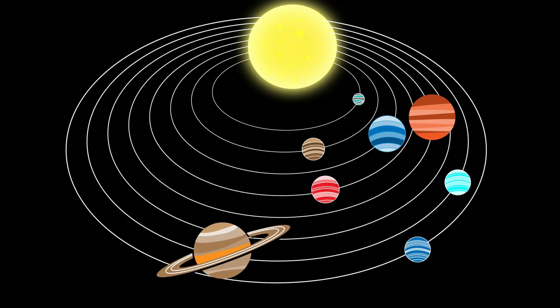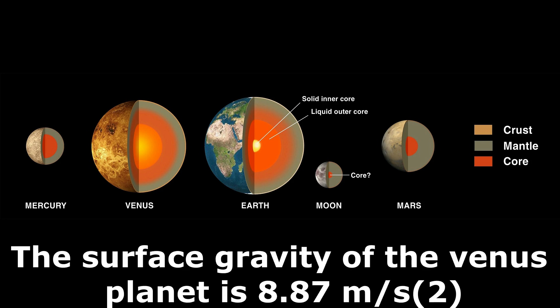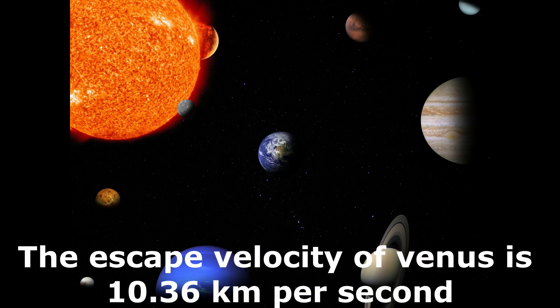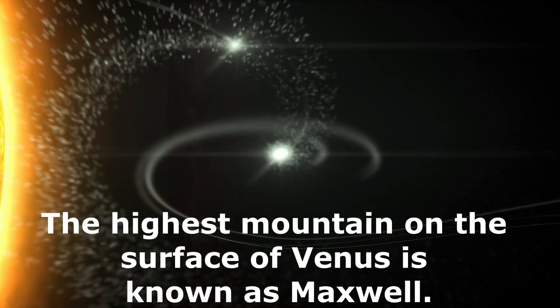The mass of Venus is 81.5% of the mass of Earth. The total mass of Venus is 4.86 into 10 to the power 24 kilograms. The surface gravity of the Venus planet is 8.87 meters per second square, which is 9.8 meters per second square for Earth. The escape velocity is 10.36 kilometers per second. Escape velocity is the velocity that is required to escape the gravitational pull of the planet.